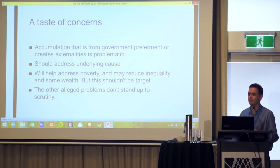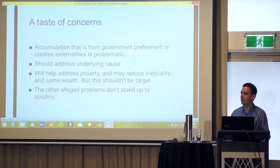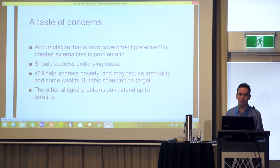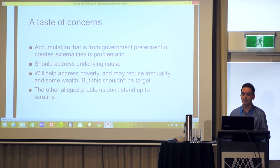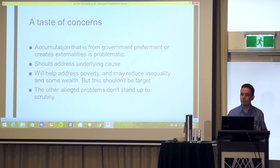In conclusion, I've presented the two types of wealth accumulation which are problematic: first, government preferment, corruption, or theft; and second, negative externalities. If these are problems, you should address them directly — address the underlying cause. Doing so will probably help poverty, may reduce inequality, and may reduce some wealth, but this shouldn't be the target for your policy. The other alleged problems — envy, political influence — don't stand up to scrutiny. Thank you.